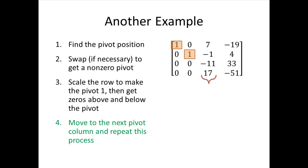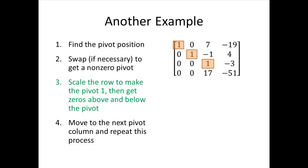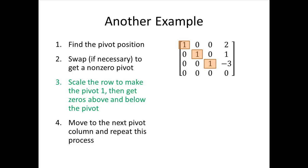The next column is also a pivot column, with a non-zero entry in the third row, third column position. Since that pivot position is not zero, we skip the swap and go to step three: we divide row three by negative eleven to turn the pivot into one. Now we get zeros above and below. We multiply row three by negative seven and add to row one, multiply row three by positive one and add to row two, and multiply row three by negative seventeen and add to row four. That results in our updated matrix.